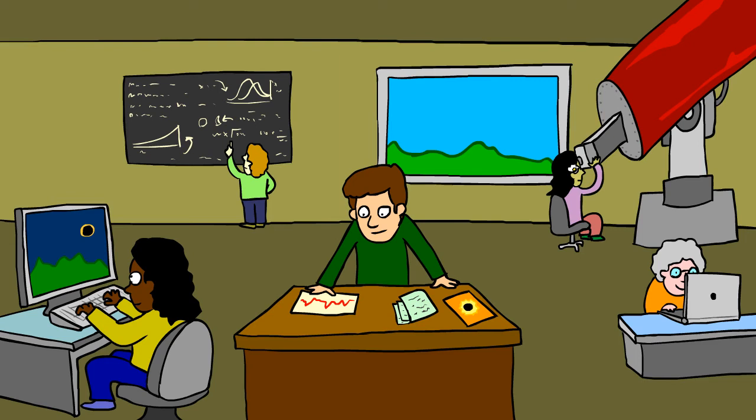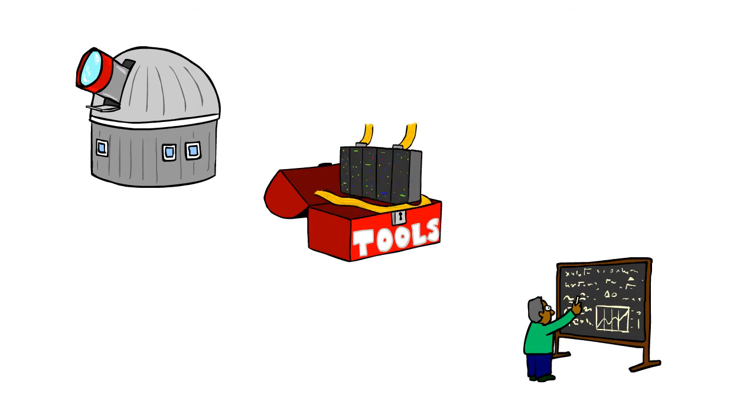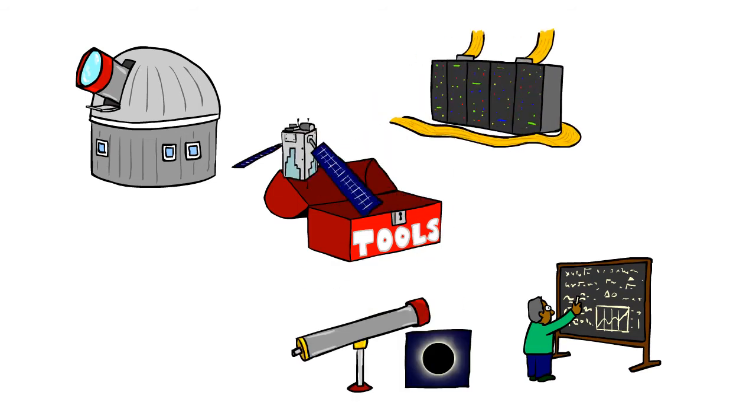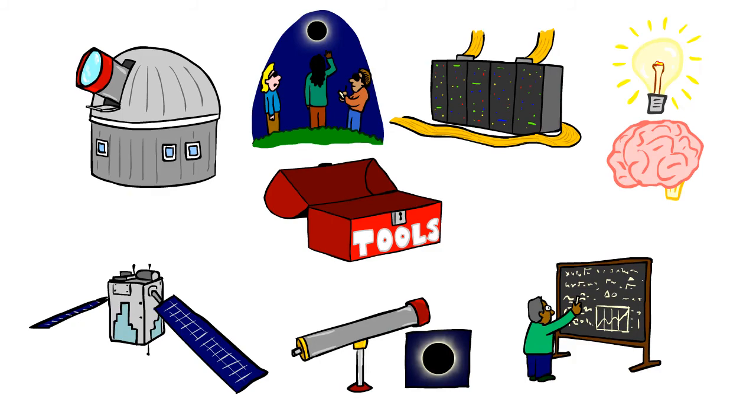Being able to predict these events is one of the many reasons HAO continues to study the Sun, solar eclipses, and their impacts on Earth. And they are using every tool at their disposal: telescopes, models, supercomputers, coronagraphs, satellites, observations, and good old brain power.